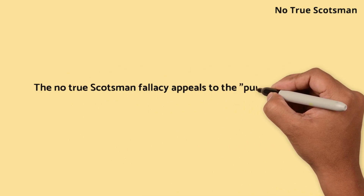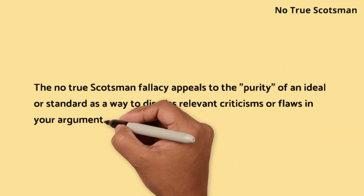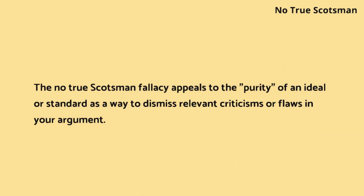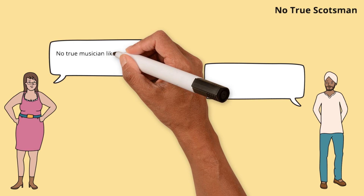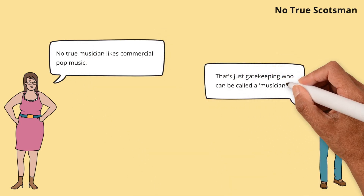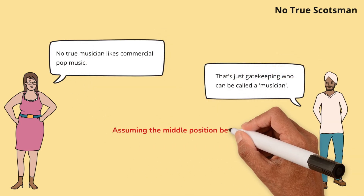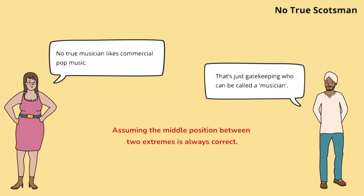No true Scotsman. The no true Scotsman fallacy appeals to the purity of an ideal or standard as a way to dismiss relevant criticisms or flaws in your argument. Bella tries to exclude counterexamples from a generalization by redefining the criteria. Jason calls out this shifting of goalposts, emphasizing consistency in definitions.